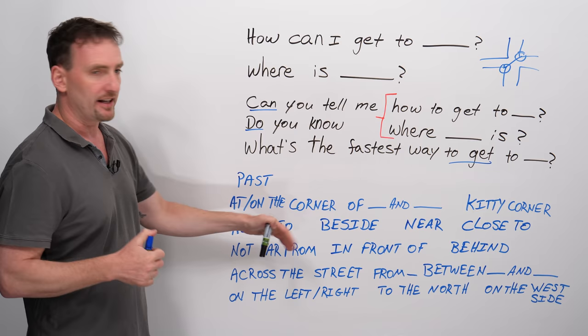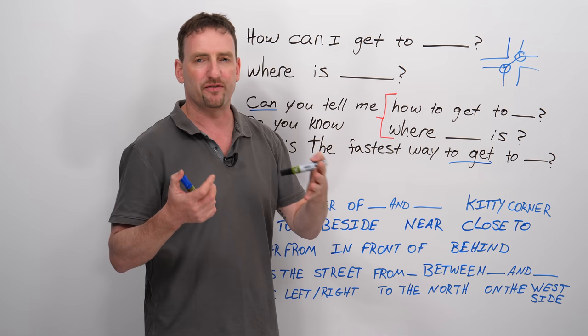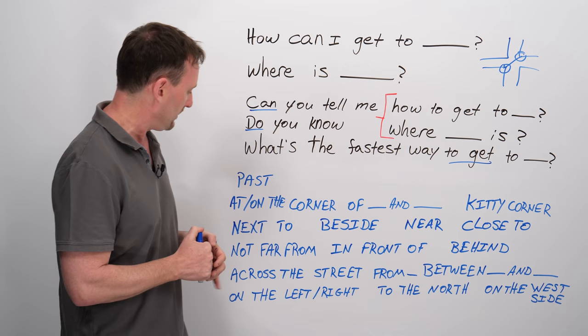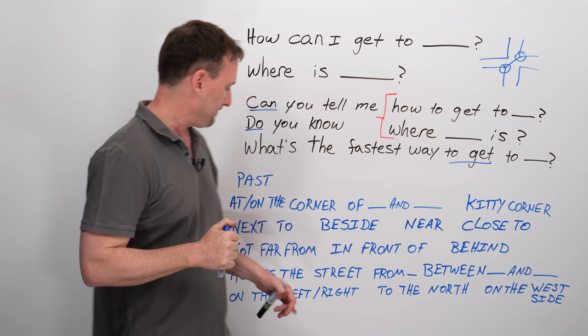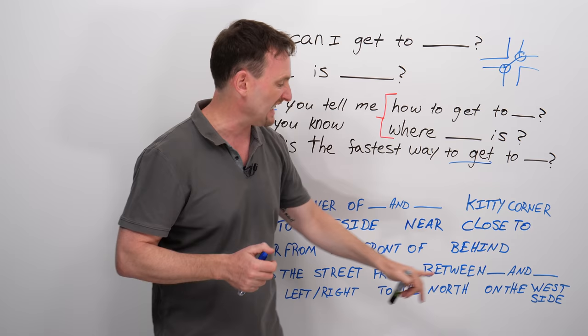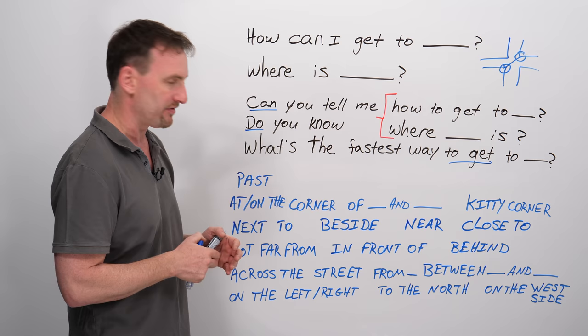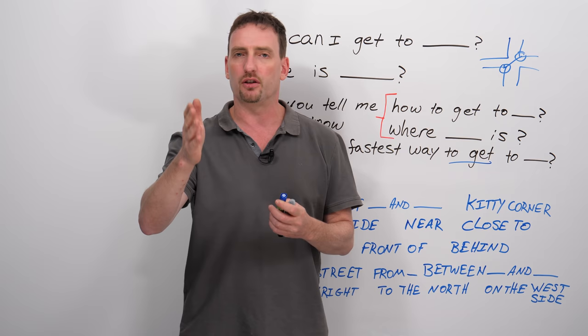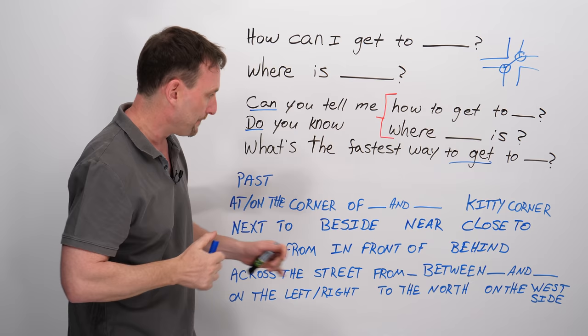Next to. Beside. Same idea. Near. Near is a little bit vague, so try not to use near or close to, but sometimes it's good enough. Not far from, in front of, behind, obviously. Across the street from something. Between the bank and the library is the building you're looking for, so between two things. Make sure you always remember between and go together when you're talking about a relationship of place. On the left or on the right. So if you're walking down the street, you will see that store on your right or on your left, depending where it is.